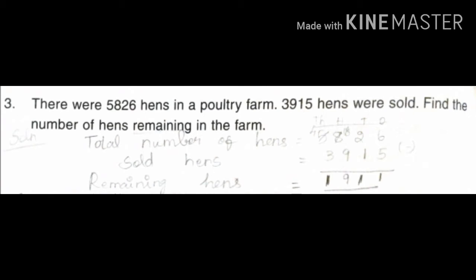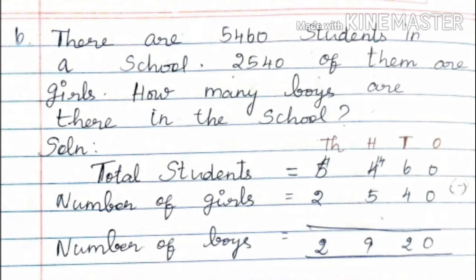Next, the sixth sum: There are 5,460 students in a school. 2,540 of them are girls. How many boys are there in the school? Total student strength of the school is 5,460 students. The number of girls in the school is 2,540.